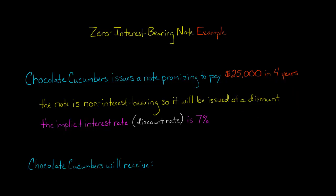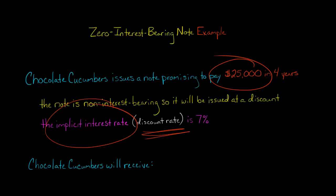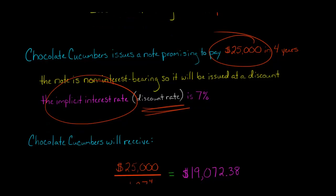What that means is this: Chocolate Cucumbers is promising to pay $25,000 in four years, but today when they're borrowing the money, they're going to receive less than $25,000. We're going to figure out how much less by discounting the $25,000 face value to its present value using a discount rate that is the implicit interest rate on this note. In this example, let's say that it's 7%.